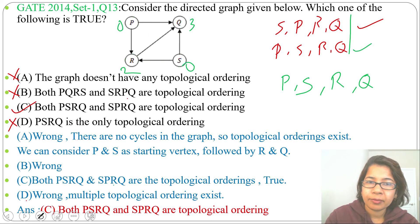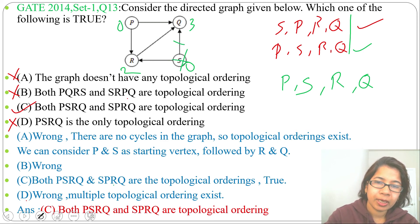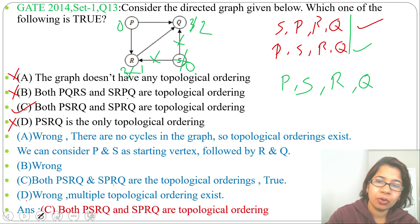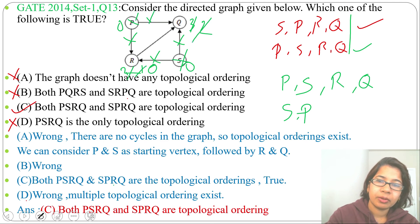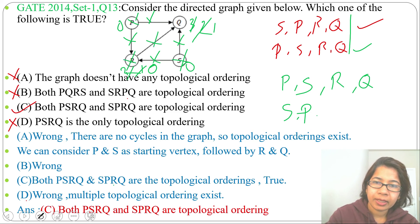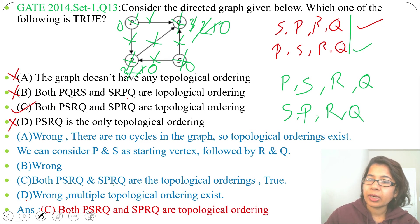Now starting source removal from S: remove S — in-degree of R becomes 1, in-degree of Q becomes 2. Insert S. Remove P — in-degree of R becomes 0, in-degree of Q becomes 1. Insert P. Remove R — in-degree of Q becomes 0. Insert R. Remove Q. We get the sequence S, P, R, Q.